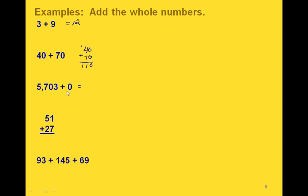For this one, we're actually using the addition property of 0 because we're adding 0 to another number. So in this case, we're just going to get that number back, so our answer here would be 5,703. Here's one that's already written for us in column form — the 1's digits are lined up and the 10's digits are lined up. So we can just add the 1 and the 7, the 1's digits, and get 8.